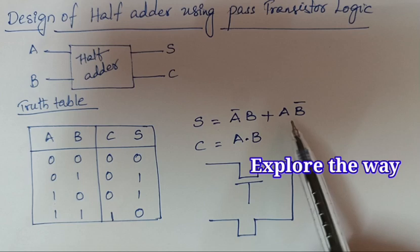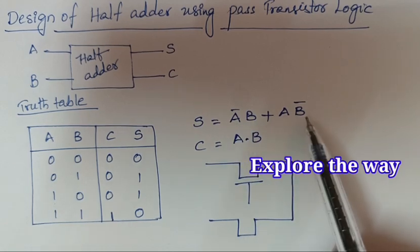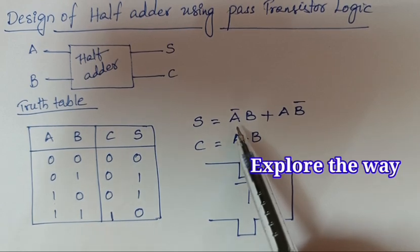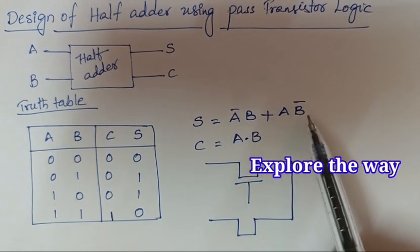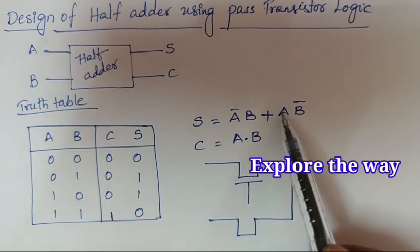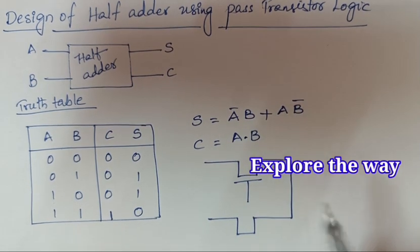In this sum expression, we have two variables: A and B. You can take one variable as the control signal and the other variable as the data input. Here, I am taking A as the control input and B as the data input.